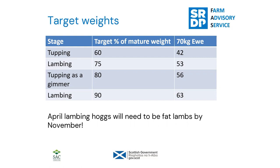Research has settled on a target tupping weight of about 60 percent of mature weight. For a 70 kilogram ewe, you'd be tupping that ewe hog at about 42 kilograms. For an April lambing flock, you need to get all your ewe lambs to tupping weight by November — that takes priority feeding and management. You might aim for a consistent growth rate to get them to about 75 to 80 percent of mature weight at lambing, requiring more management through the winter than if you were just growing them on as gimmers.